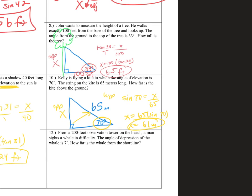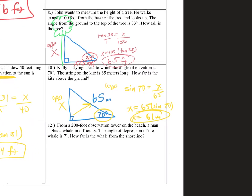So opposite is always going to be X? Not necessarily. They could tell you that you walked 30 feet from something to another and the kite string was 65, or they could ask how far you are standing away from something. If the kite string is 65, then it would be adjacent and hypotenuse. I just use X because it's my unknown.